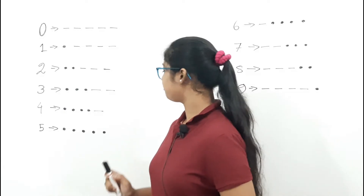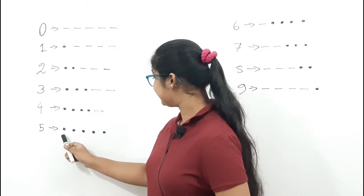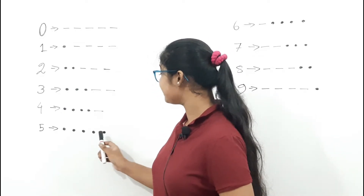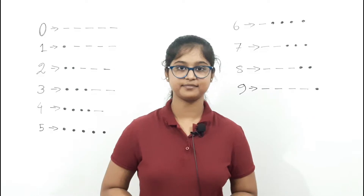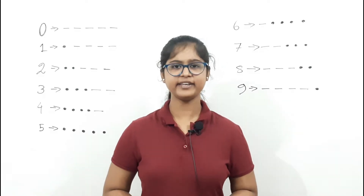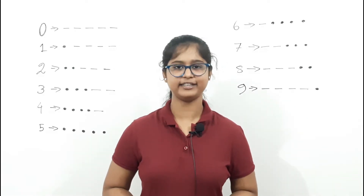For example, five: D, D, D, D, D, DIT. I think this is now clear.